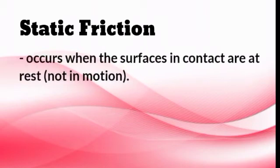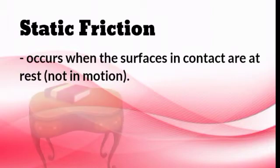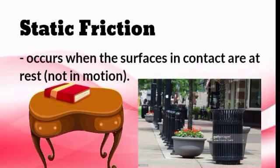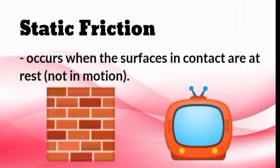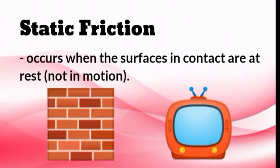Static friction is friction that occurs when the surfaces in contact are at rest or not in motion — meaning to say, it is not moving. For example, a book resting on a desk and a potted plant sitting on a side table. These are some examples of static friction.